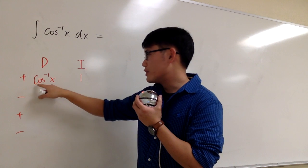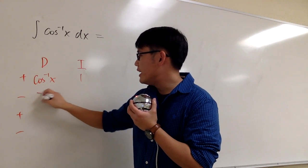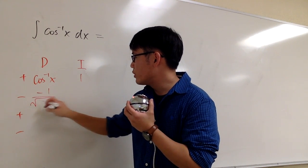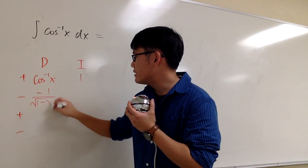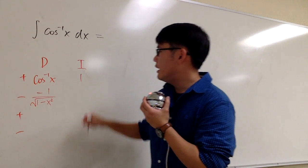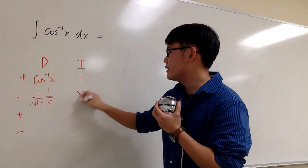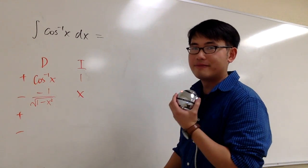Differentiating inverse cosine, we get negative 1 over square root of 1 minus x squared. And integrating 1 in the x world, we get x.